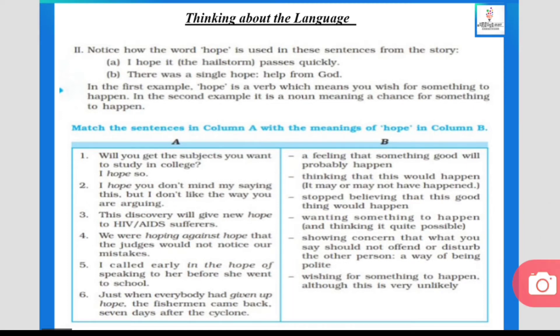Fourth: 'We were hoping against hope that the judge would notice our mistakes.' We are wishing for something to happen although it is very unlikely — they hope, but they know the judge will probably not do so. Fifth: 'I called early in the hope of speaking to her before she went to school.' This shows wanting something to happen and thinking it quite possible — that's why the action was taken.